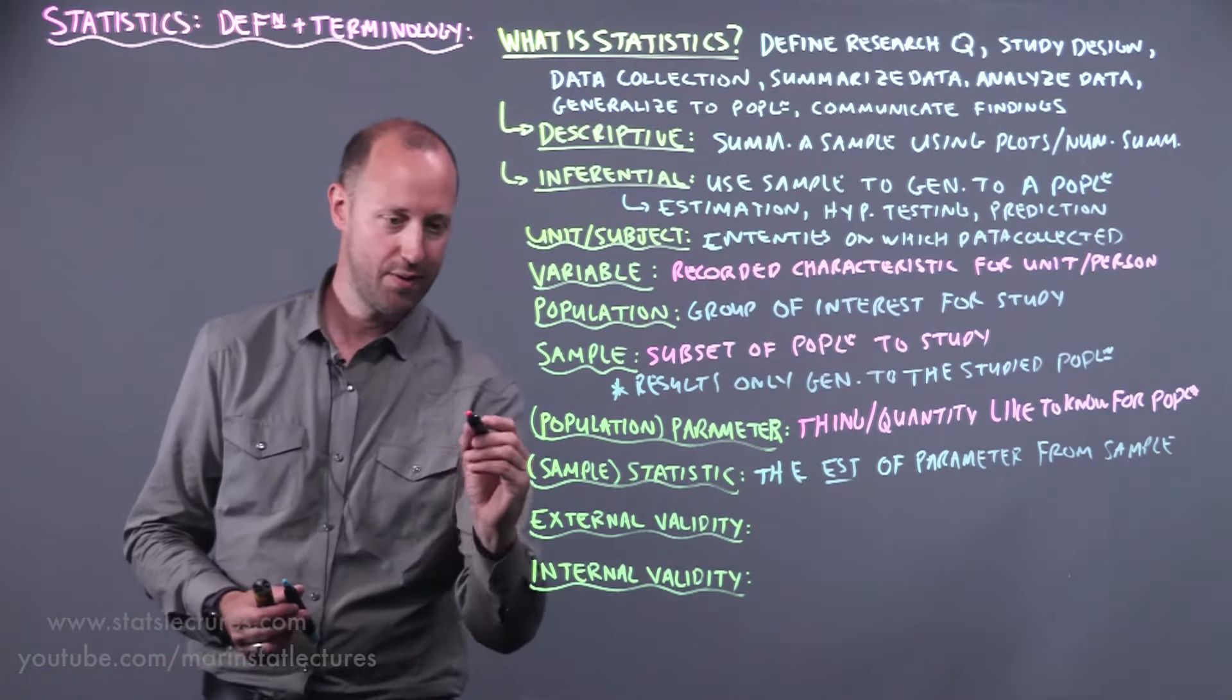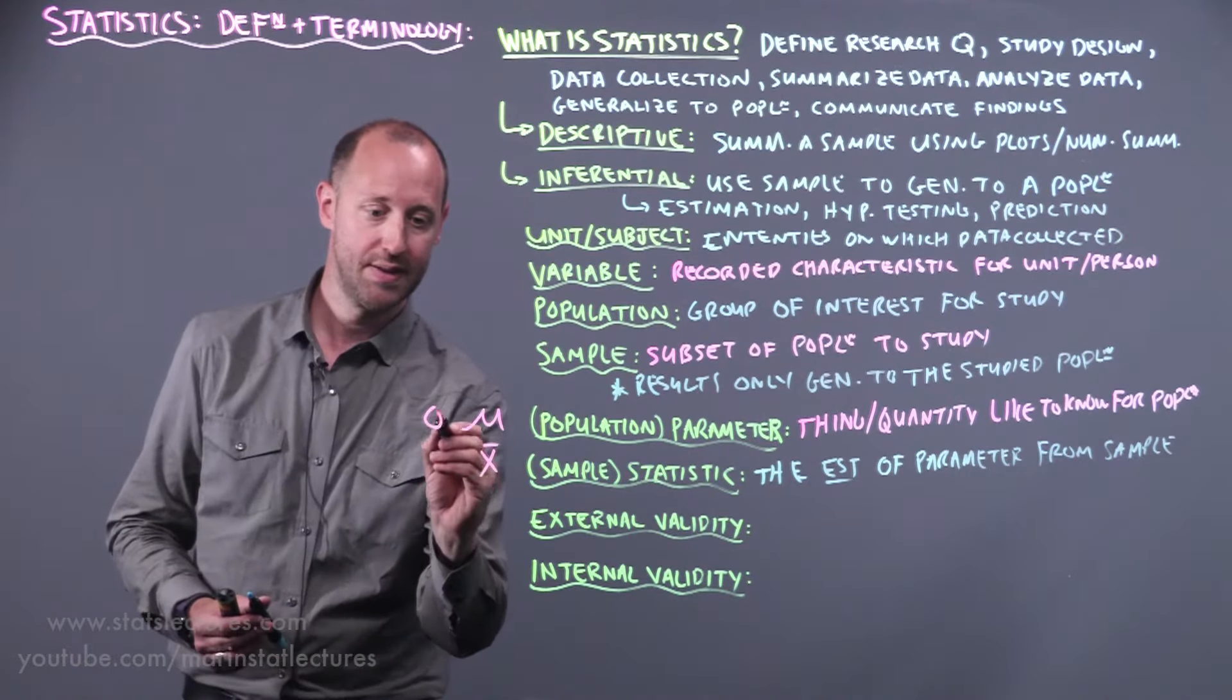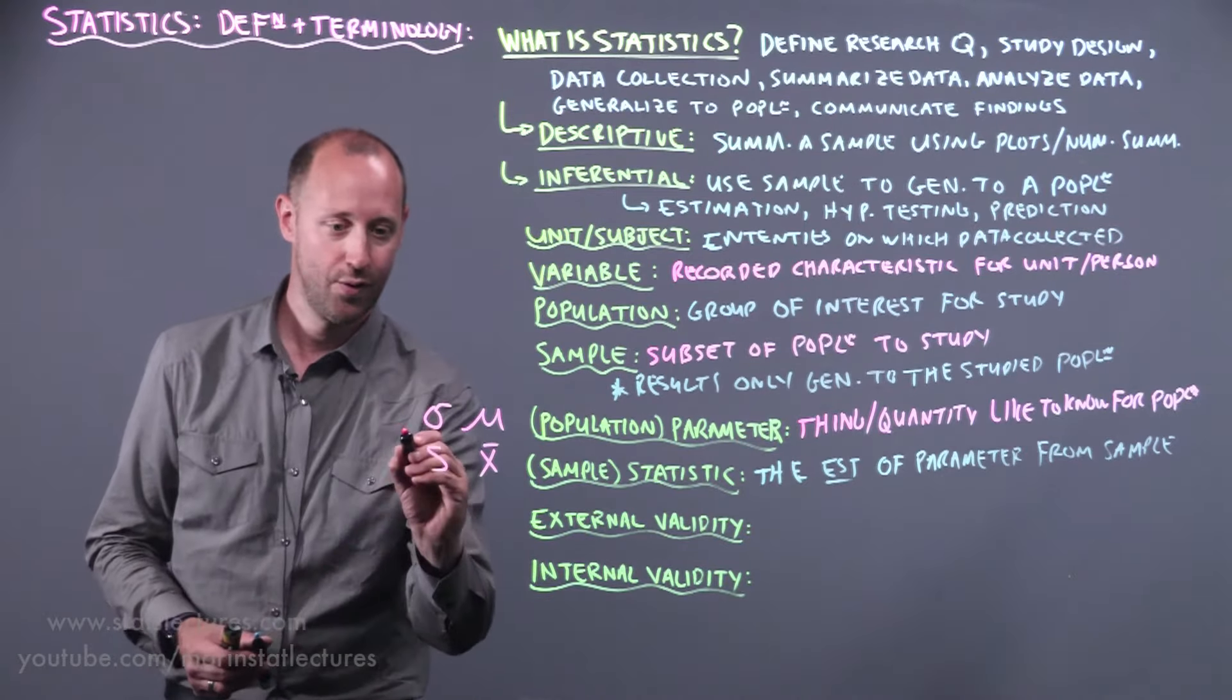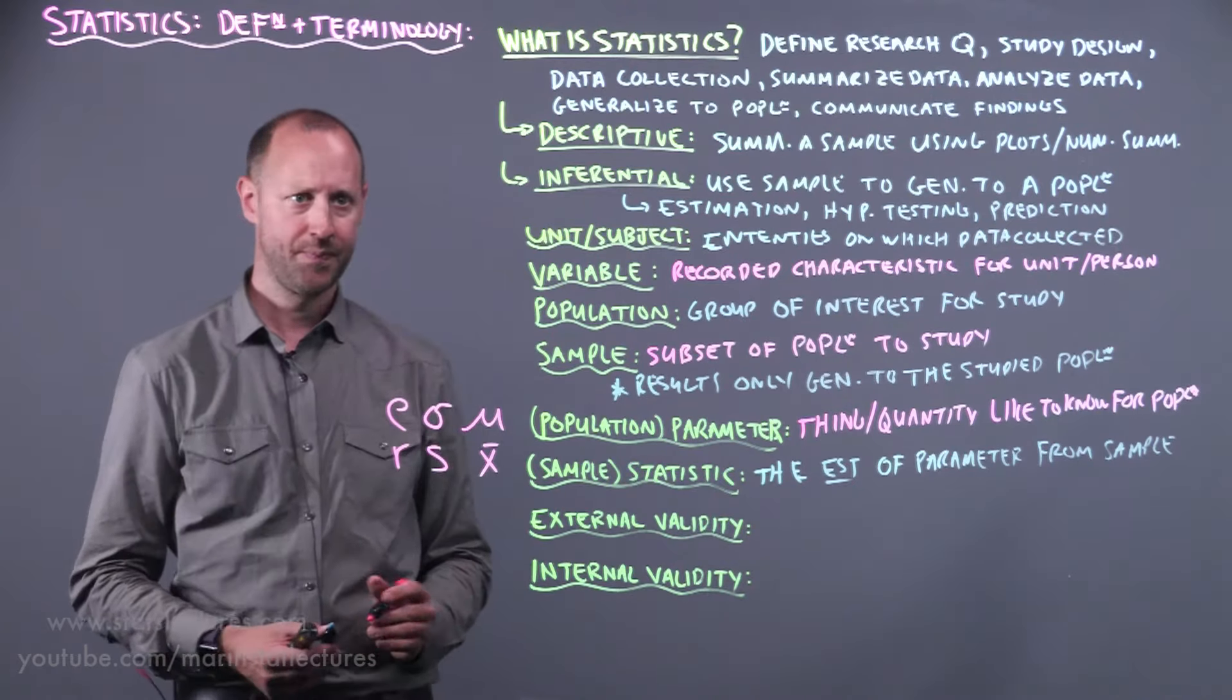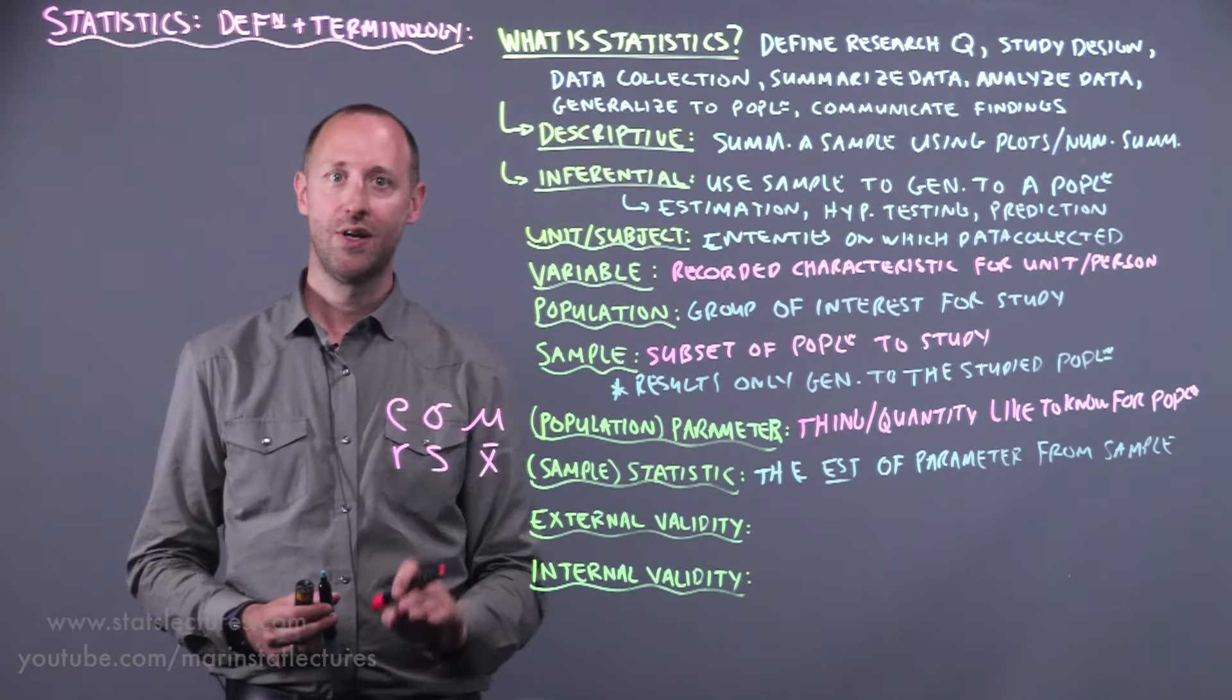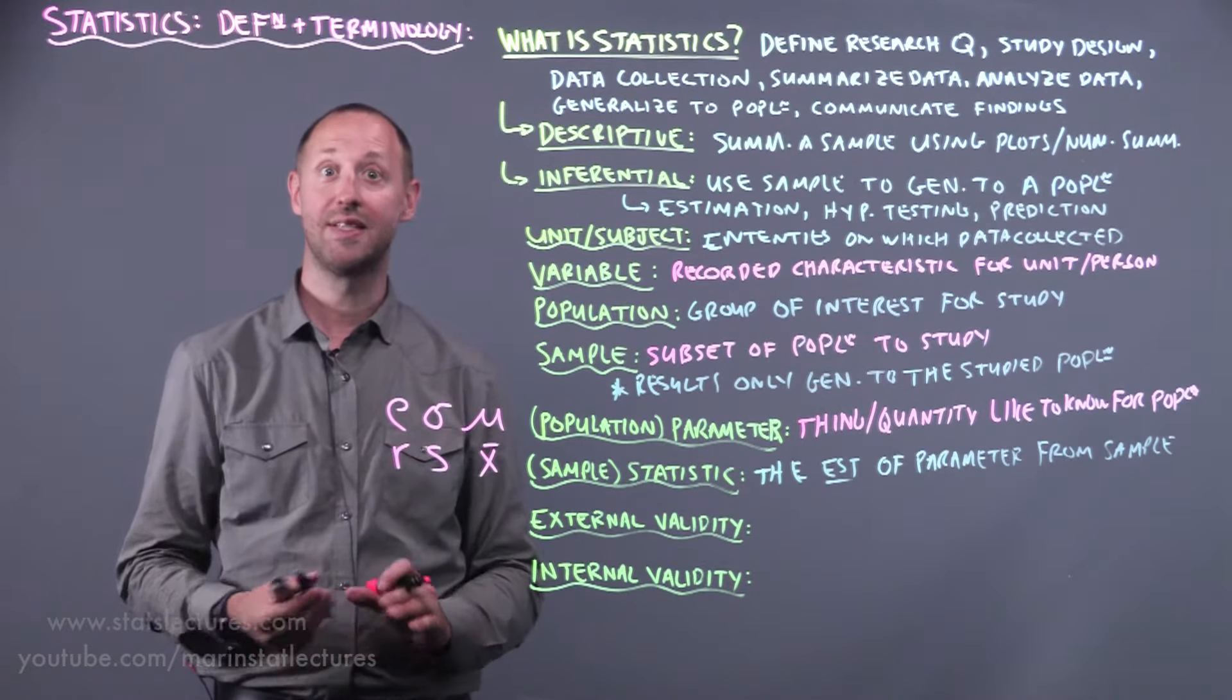So just writing down a few that we're going to come across: μ for the population mean, x̄ for the sample mean, σ for the population standard deviation, s for the sample standard deviation, ρ for the population correlation, r for the sample correlation. One theme in the notation is that generally Greek letters are used to represent population or true or theoretical values, Latin letters are used to represent sample estimates.